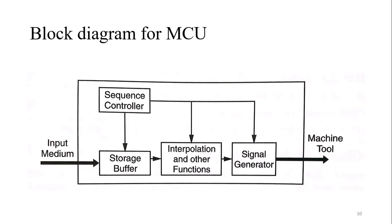The signal generator amplifies the output signal and gives commands to the actuators or motors. There is also one very important component: the sequence controller. This is very important because it defines which function has to be performed first. For example, when starting a cutting operation, the sequence controller determines whether the machine tool starts first, or the cutting starts first, or the coolant starts first. As we know, the coolant would start first — and this is controlled by the sequence controller. So this is the inside block diagram of the MCU: input, storage buffer, interpolation, signal generator to the machine tool, and the sequence controller.